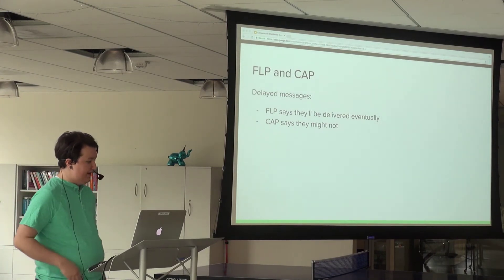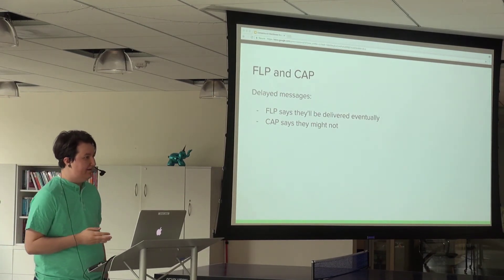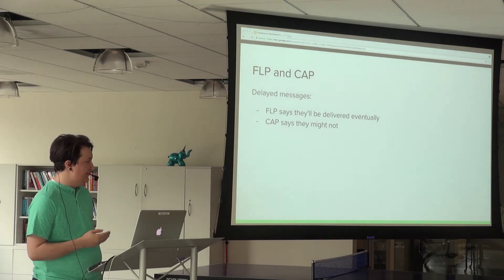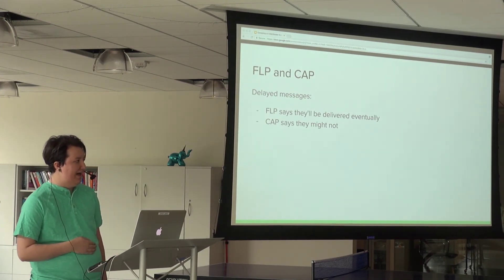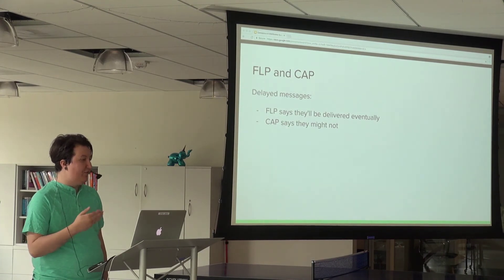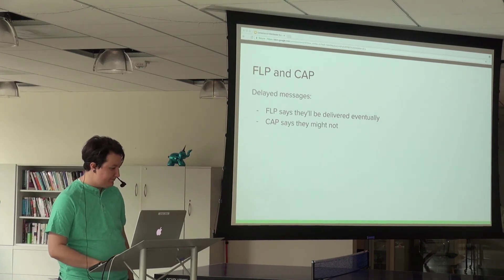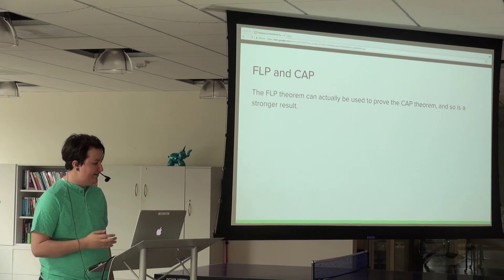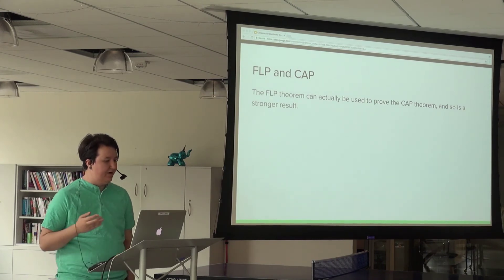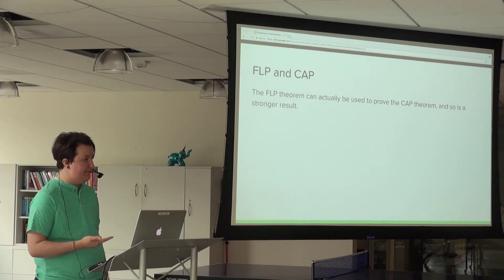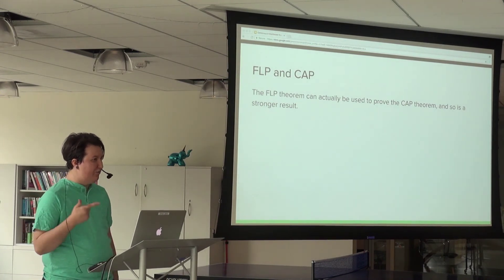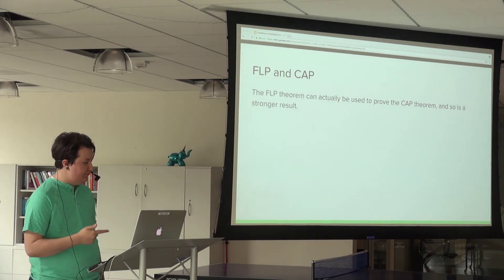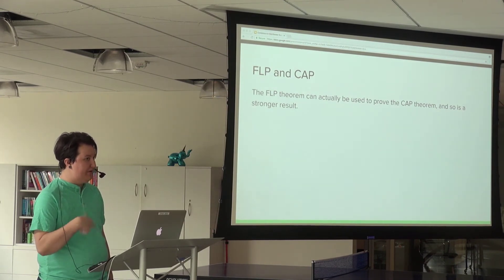When a node can't receive messages, FLP considers the node to have failed. CAP considers a node to still be up if it can't receive messages, as long as the node is still running. To meet the definitions of consistent and available under CAP, partition nodes still have to serve requests that remain consistent with the rest of the cluster, which explains why it's so hard.